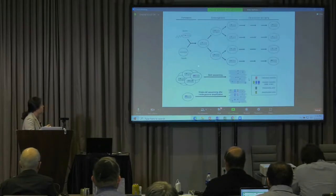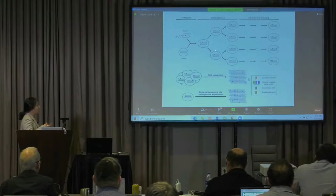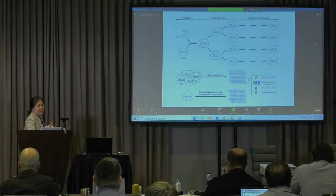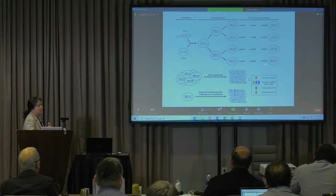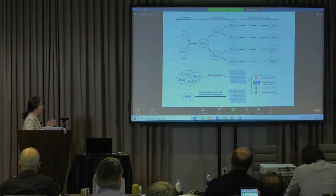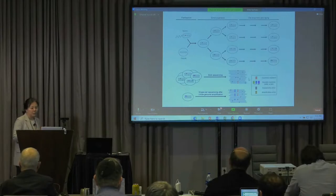Depending on when mutations occur, we may or may not be able to detect them from bulk sequencing. Germline mutations present in all cells can be easily detected by typical bulk DNA sequencing. But mutations that occur very late in development, during aging, or in pathological neurodegenerative conditions — present in a very limited number of cells or in single cells — cannot be effectively detected with bulk sequencing. So we use single-cell DNA sequencing to examine individual neuronal genomes.